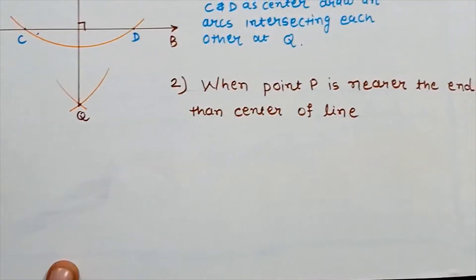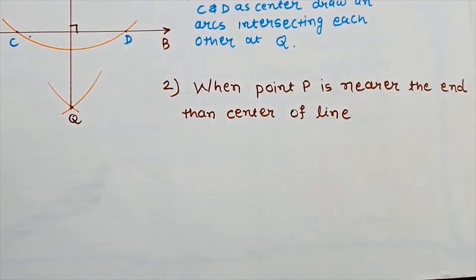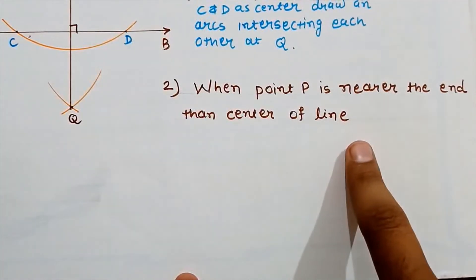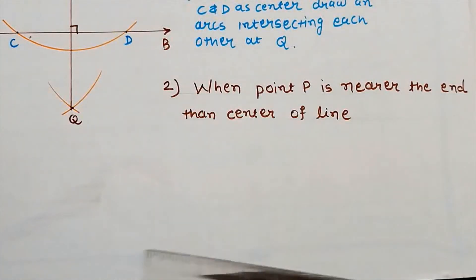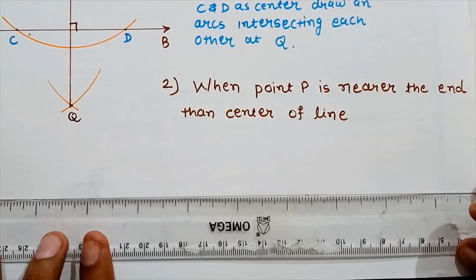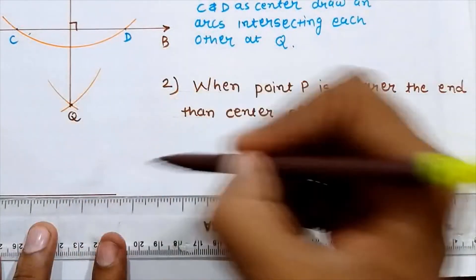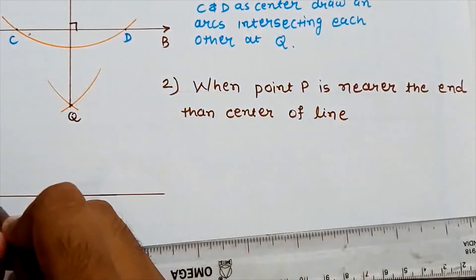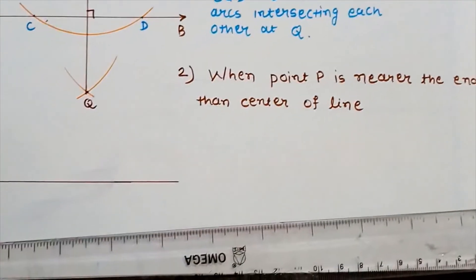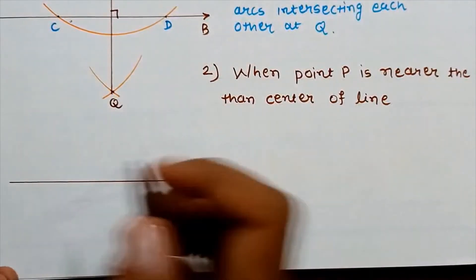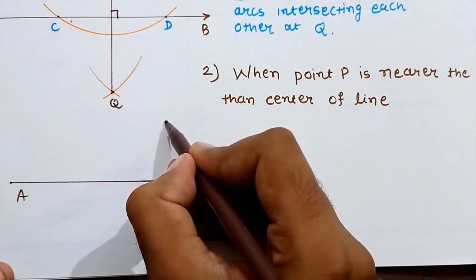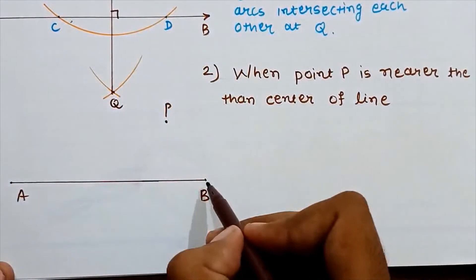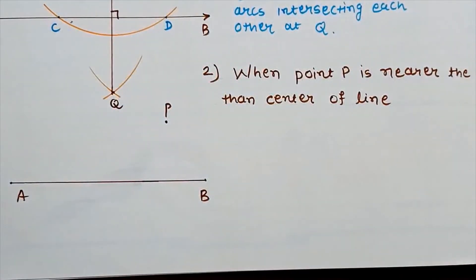Here is the situation: let's say our line is AB, and point P is somewhere over here, which is nearer to the end B. Now in that case, we can follow this method to draw the perpendicular.